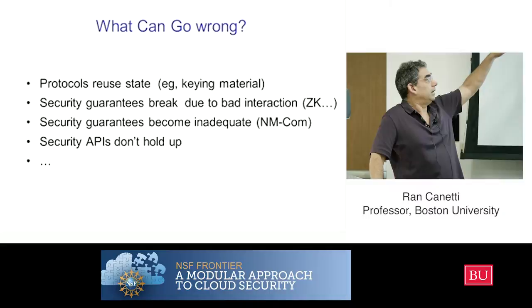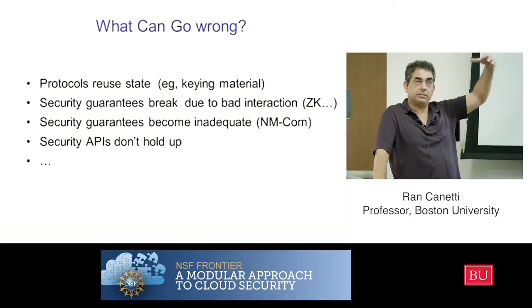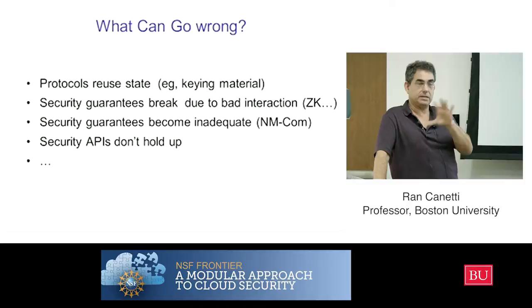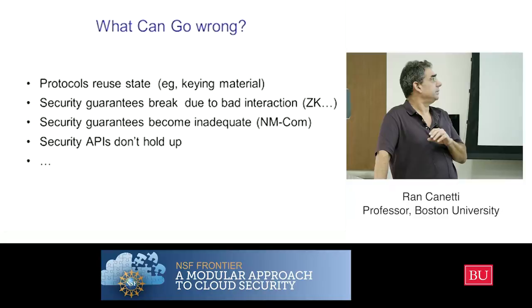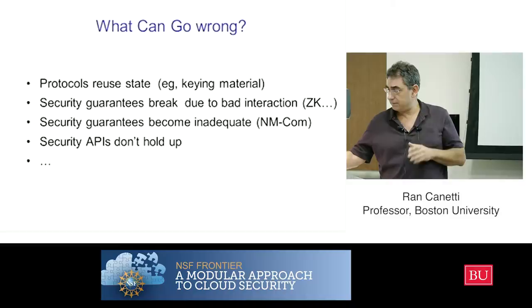Even the security guarantees themselves can become inadequate when we think about our system as a component in a larger system. The APIs don't hold up, and many things can go wrong. Let me give you one example of something that goes wrong when you compose things together in an unexpected way.